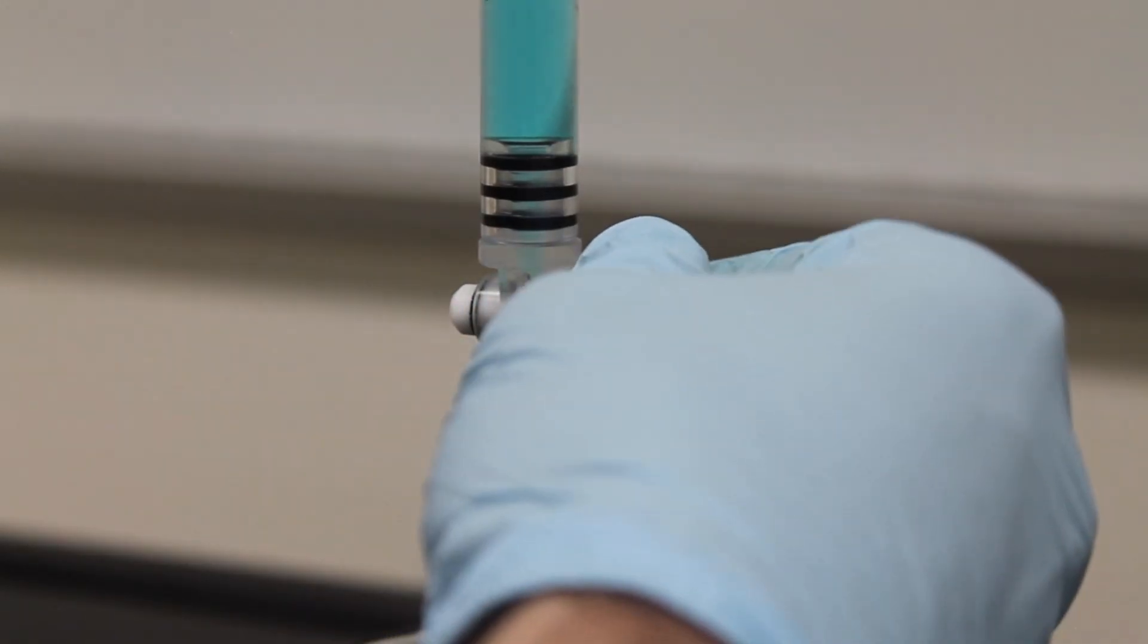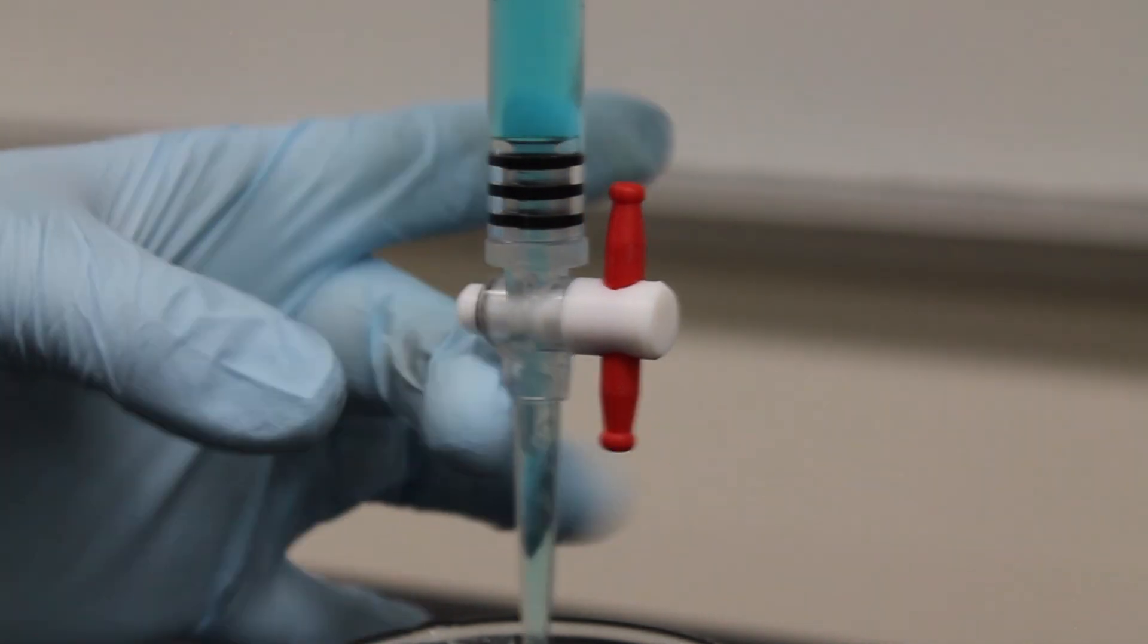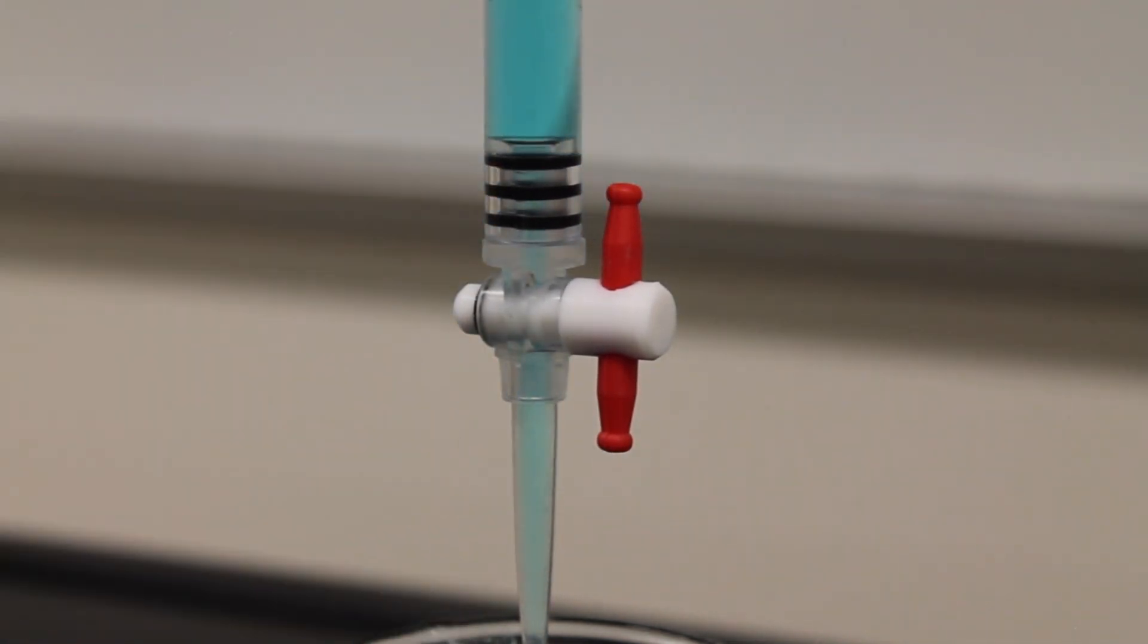Open the stopcock to let a steady flow of liquid through. There are commonly bubbles trapped in the tip of the burette. These bubbles can throw off the precision of your measurements so it is important to get them out. Give the burette a few light flicks with your finger to remove the bubbles. Once the bubbles are cleared turn the stopcock.